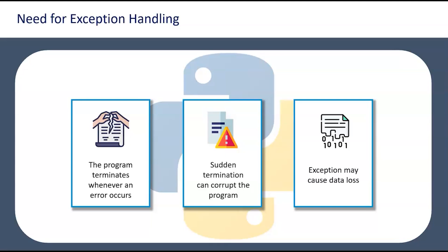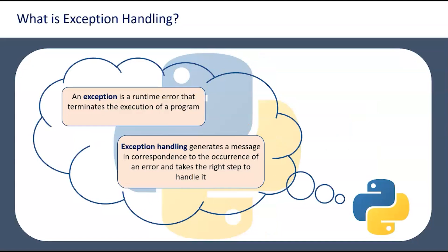Even if data loss happens, you pass on or capture a meaningful message in the logs at the right point. Now, what is exception handling? An exception is a runtime error that terminates the execution of a program. Exception handling means you generate a message in correspondence to the occurrence of the error and take the right step to handle it — throwing a meaningful message, navigating the program in the right direction, or taking corrective actions.